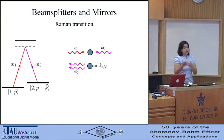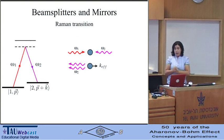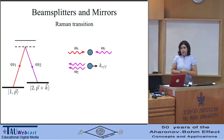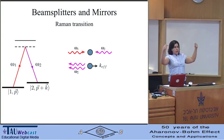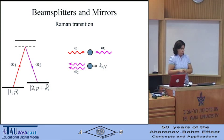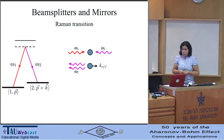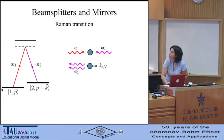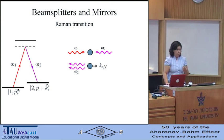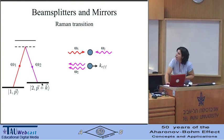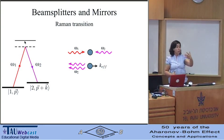The beam splitters and mirrors mentioned earlier are lasers, and the effect they use is the Raman transition. You take an atom and shine two counter-propagating lasers on it — one at frequency omega-1, the other at frequency omega-2. This induces a two-photon transition between the ground state with momentum p and the excited state with momentum p plus k. The frequencies are slightly detuned through a third state so that there are no one-photon transitions.